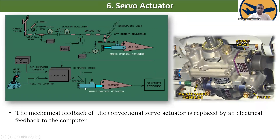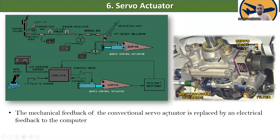Here is the servo actuator, with the solenoid valve, filter, and maintenance override visible. The mechanical feedback of the conventional servo actuator is replaced by an electrical feedback to the computer. In the conventional servo actuator, mechanical feedback was used, but now the servo actuator uses electrical feedback — the electrical feedback response goes directly to the computer.